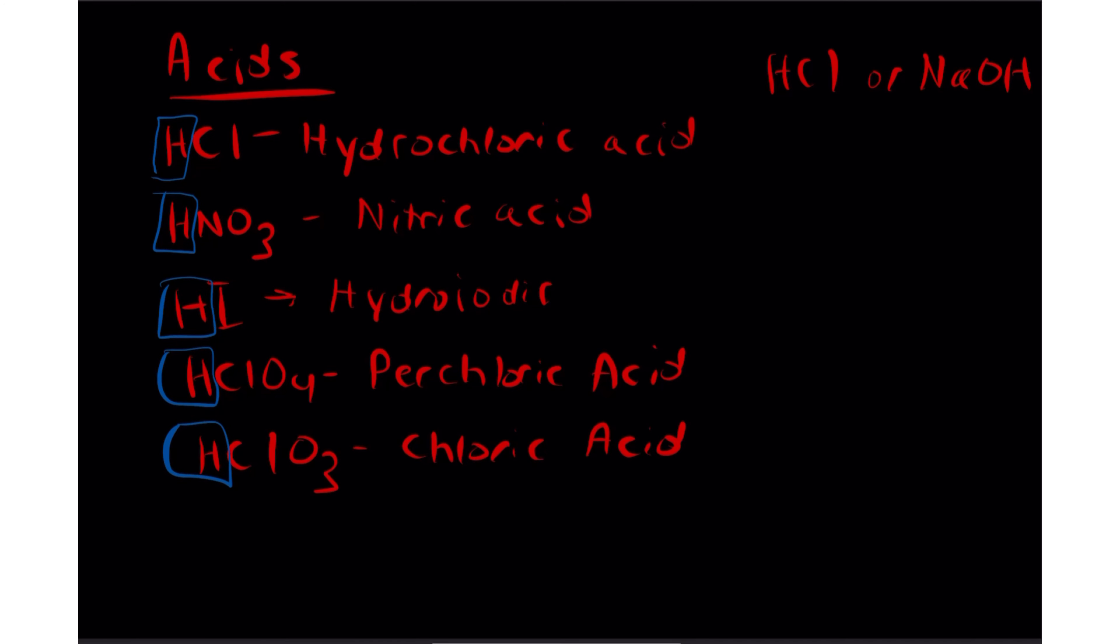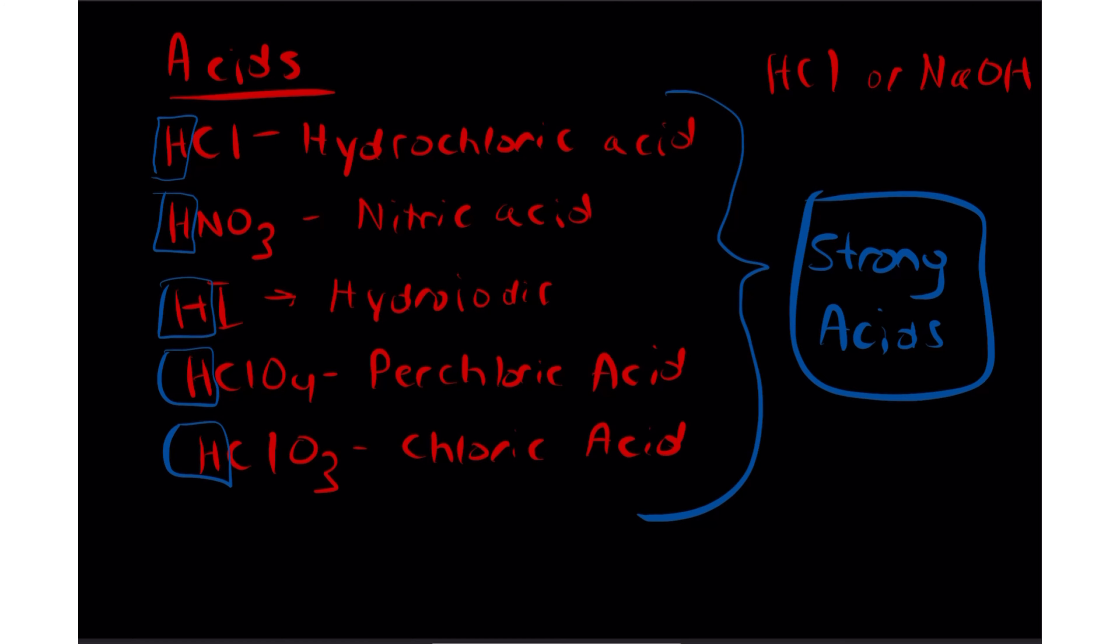Though there are some exceptions, and I'll get into that a bit later. But this is a way that you can distinguish between an acid and a base. Acids typically have that hydrogen right in the front of the chemical formula. That way you can quickly identify which one of these are an acid. What else do we have about these acids? These are all considered strong acids.